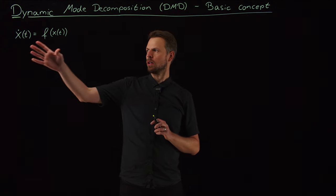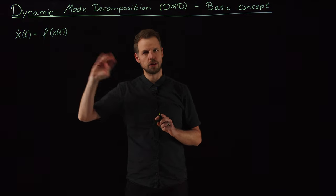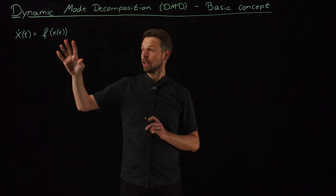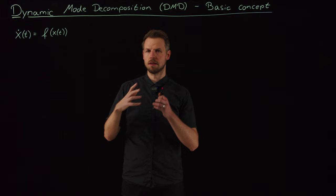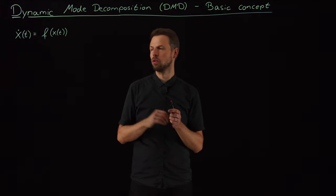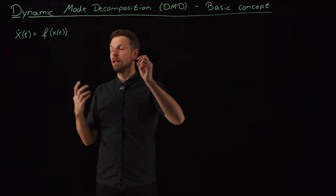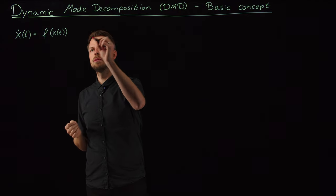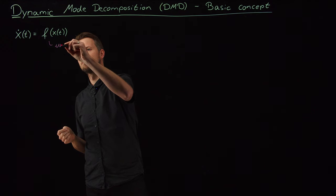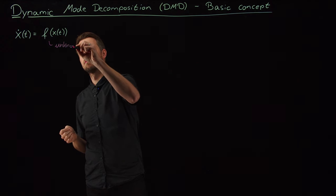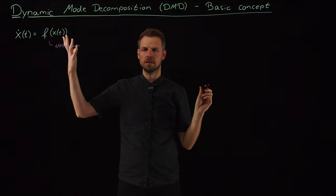Our system is, as always, x dot equals f of x, now very general, and we may have certain issues with this f of x that make it more challenging to study this system. The first and most obvious problem could be that this is unknown. Obviously we have a problem, maybe we get data, but we don't know the system.